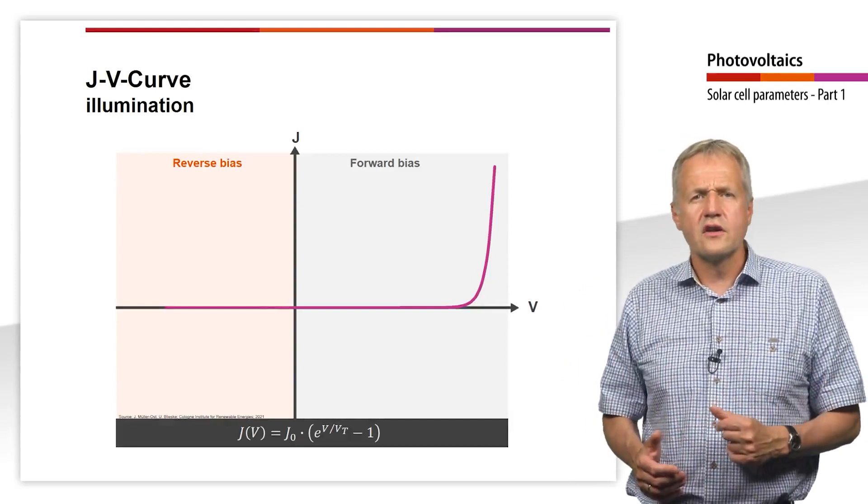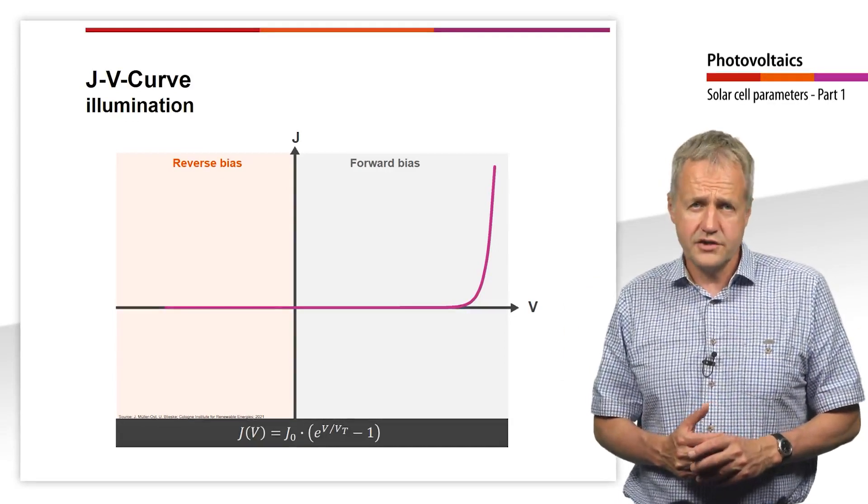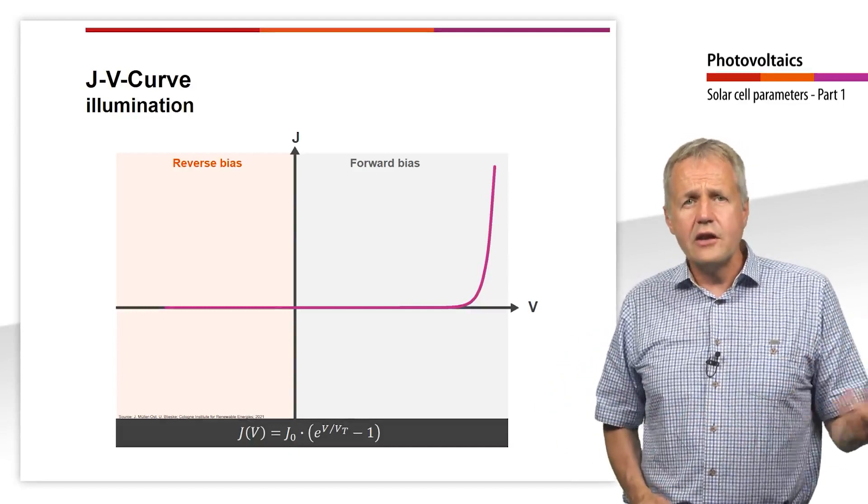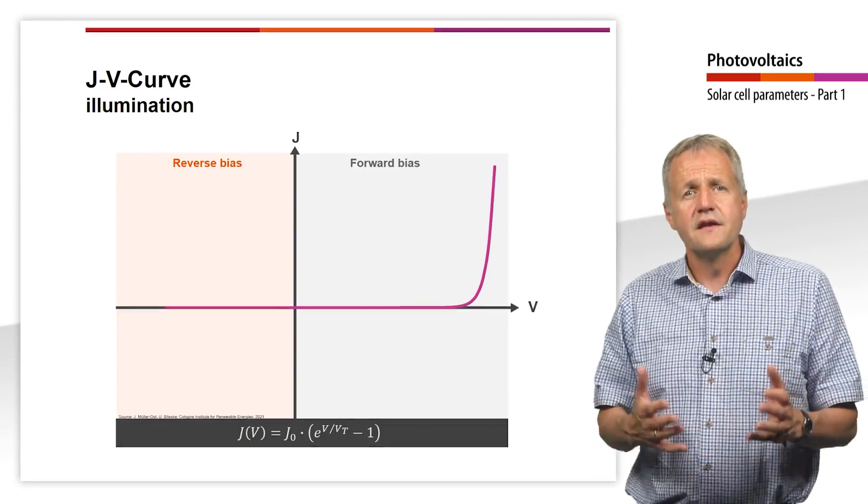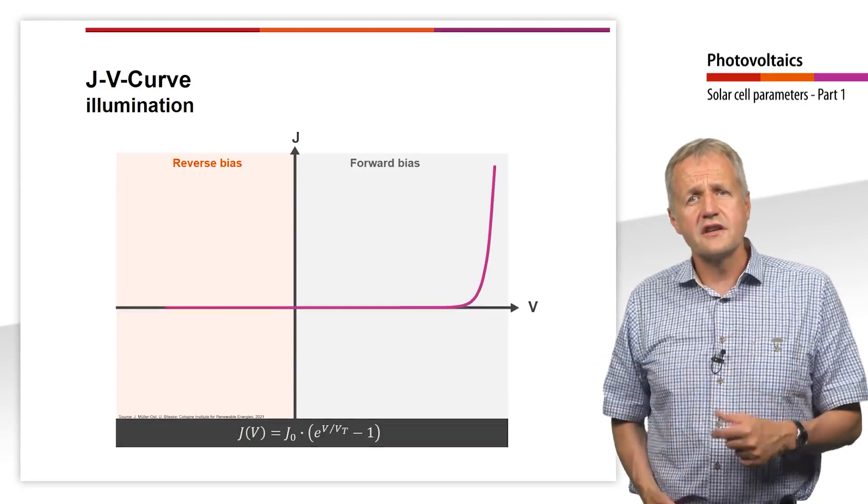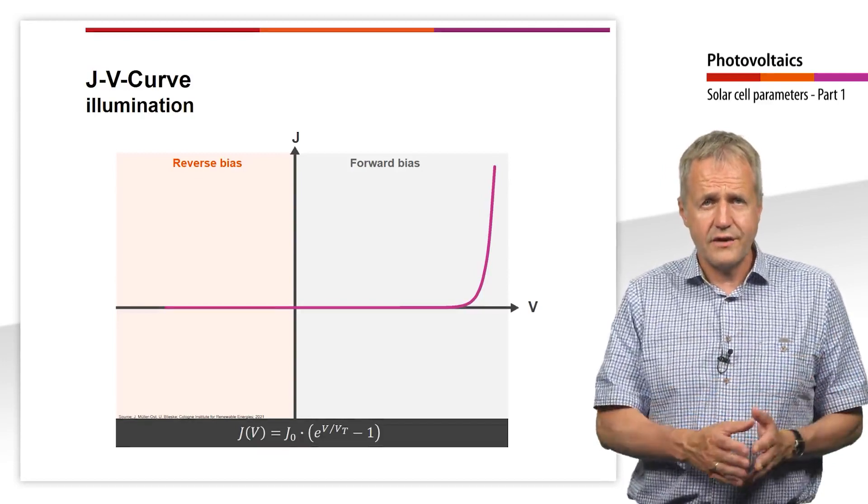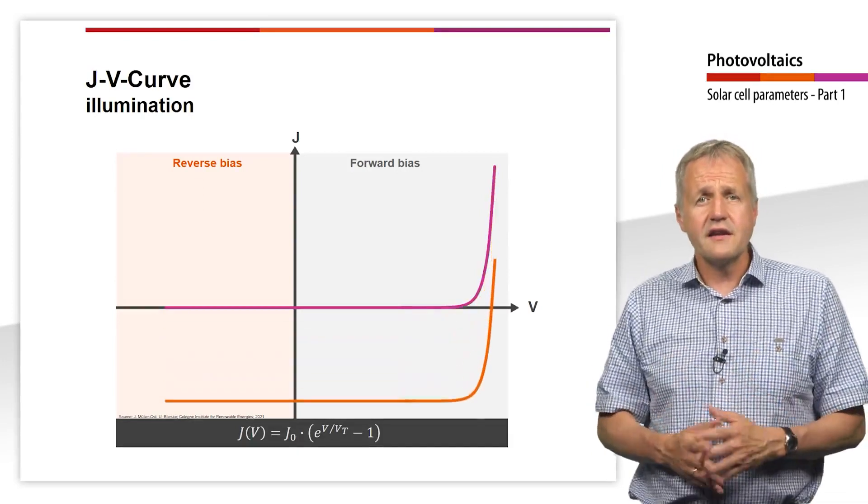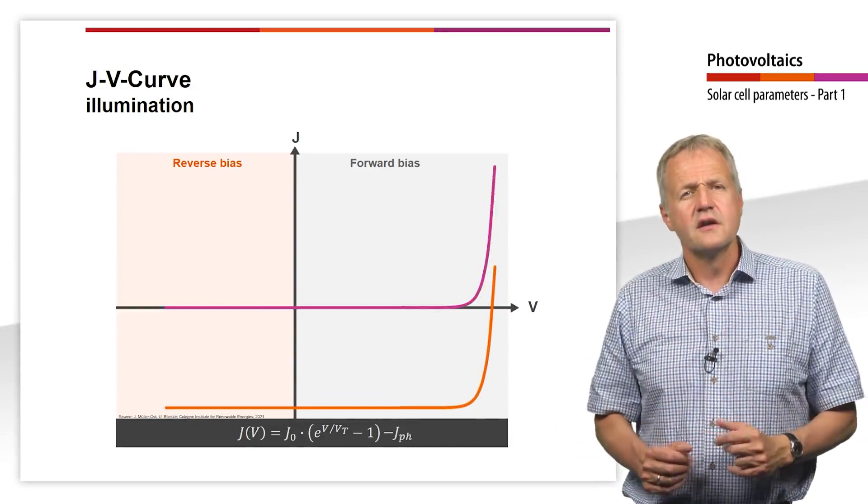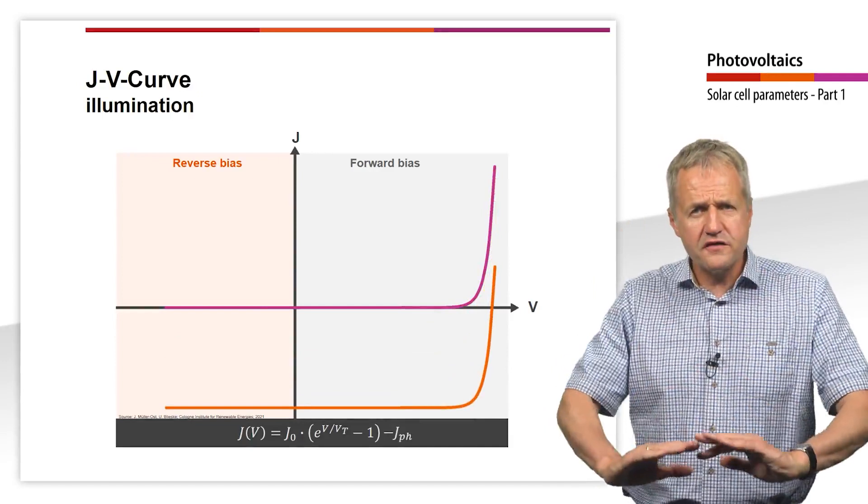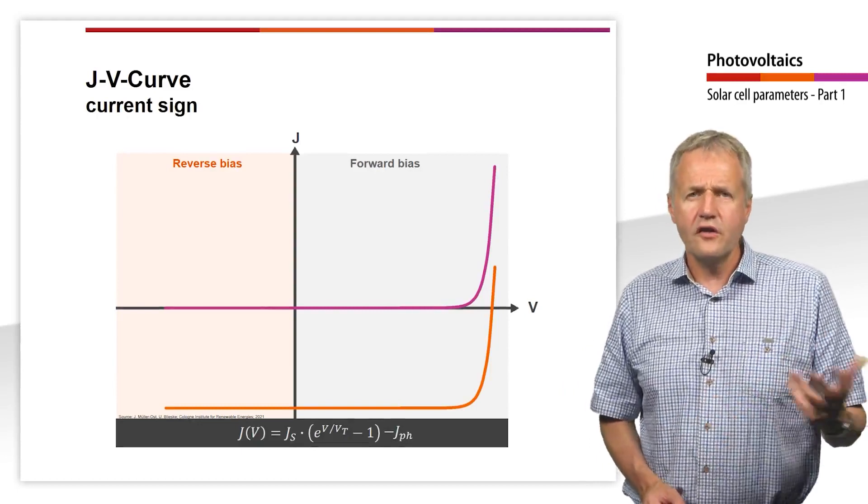Now, let's look at what the JV curve looks like under illumination. We have learned that the illuminated solar cell generates a current in the direction of the reverse current. The reverse saturation current is negative. The characteristic curve shifts in a negative direction. Mathematically, the characteristic is described by the Shockley equation minus the photocurrent. The degree of downshift mainly depends on the irradiance. We will look at this relationship in more detail later.